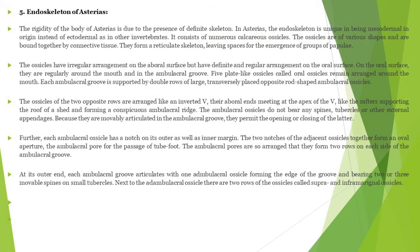The rigidity of the body of Asterias is due to the presence of a definite skeleton. In Asterias, the endoskeleton is unique as being mesodermal in origin, instead of ectodermal as in other invertebrates. It consists of numerous calcareous ossicles of various shapes, bound together by connective tissues. They form a reticular skeleton, leaving spaces for the emergence of groups of papillae.